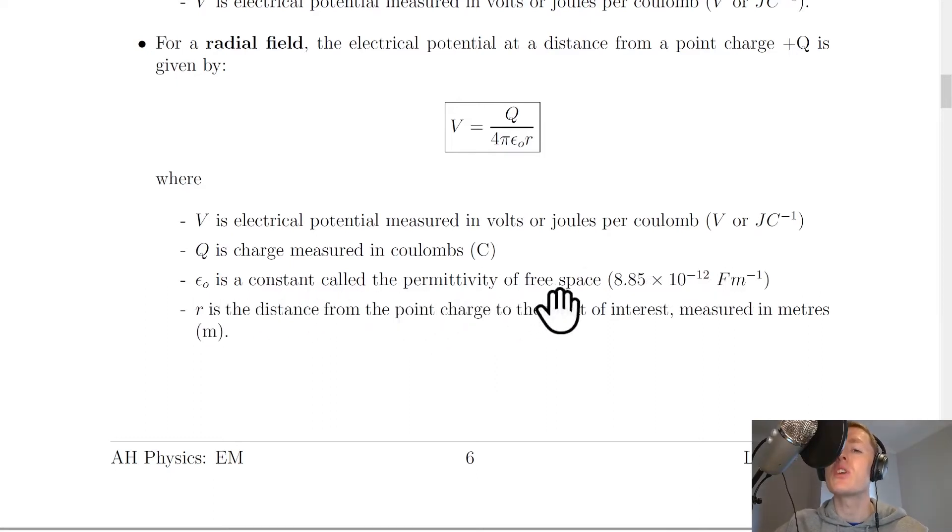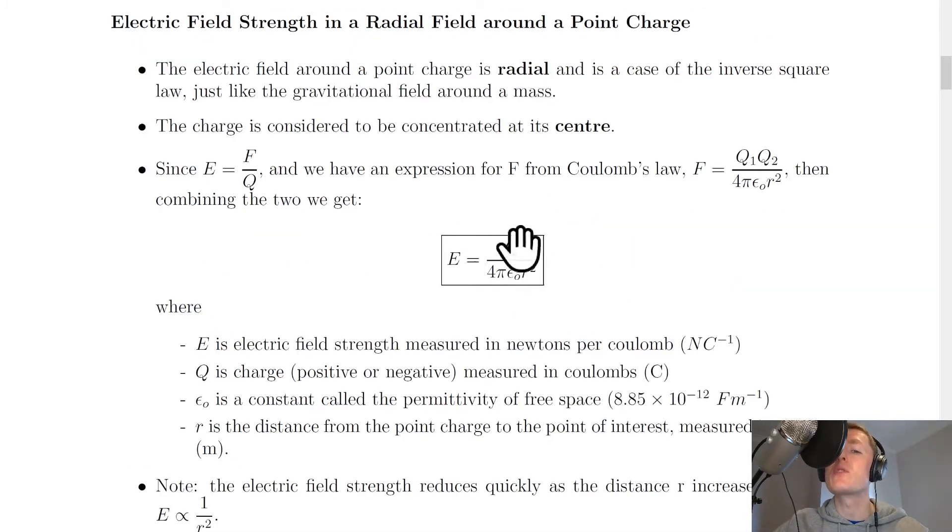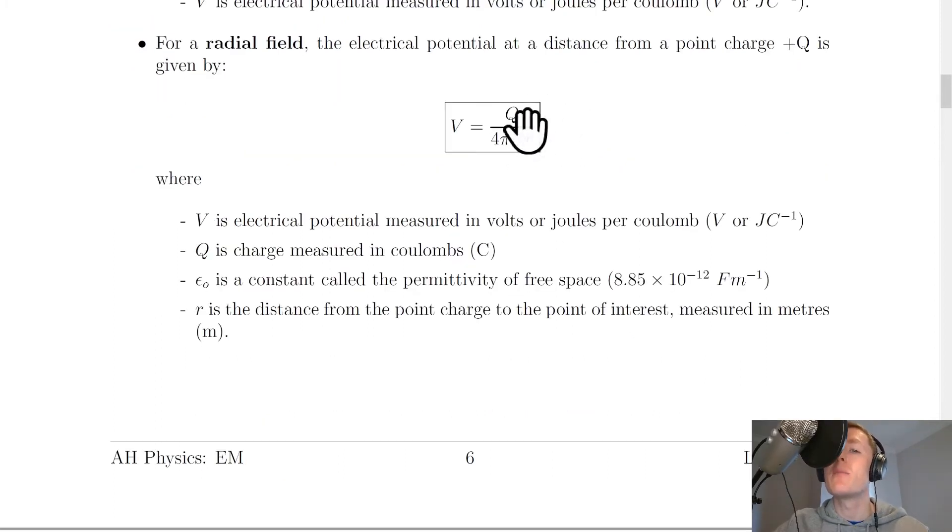And R is the distance from the point charge to the point of interest measured in metres. Firstly, notice how similar this expression is to the electric field strength in a radial field around a point charge, which was this one here, E equals Q over 4 pi epsilon naught R squared. And this was a vector quantity, remember. However, we don't have a squared term in the bottom anymore, just R. And this is now a scalar.